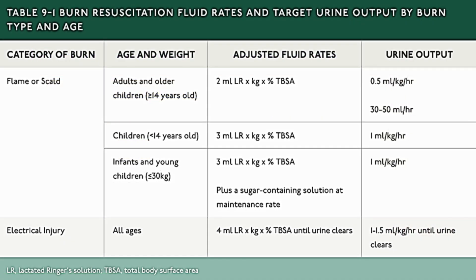To recap: for flame or scald burns in adults and children 14 years and older, we use 2 mL of lactated Ringer's per kilogram per percentage TBSA burned, targeting urine output of 0.5 mL/kg/hour (or 30–50 mL/hour). For children under 14 years with flame or scald burns, we use 3 mL of lactated Ringer's per kilogram per percentage TBSA burned, targeting 1 mL/kg/hour urine output.